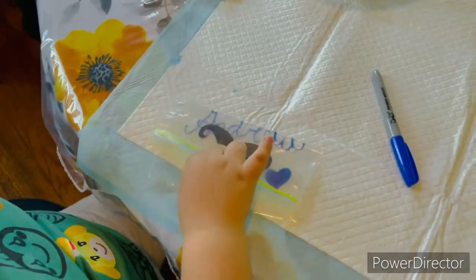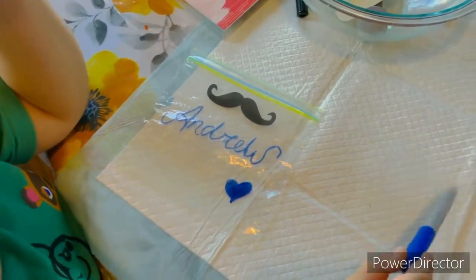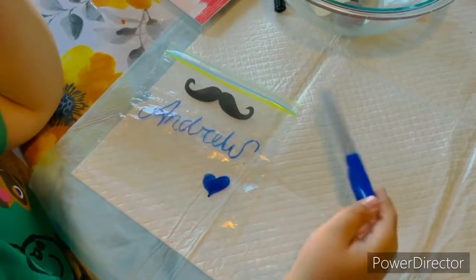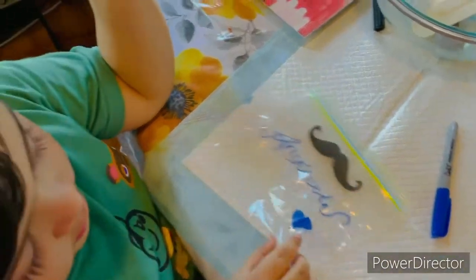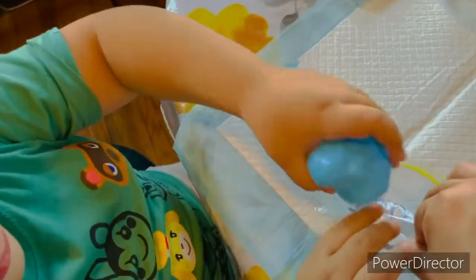Also, get a Ziploc bag, put your name, and put a Mr. Pen mustache sticker and use the permanent marker to write your name. You can put hearts or anything you want on it, or little designs.